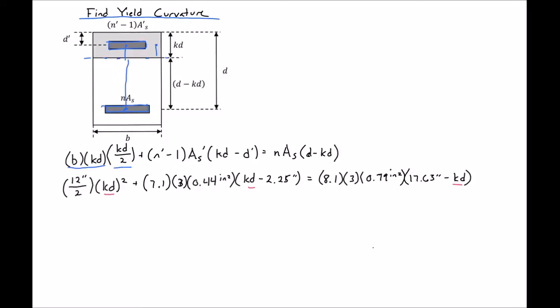Once again, you can use whatever solver you want, or this simplifies to a quadratic fairly nicely. If we simplify it to the quadratic form, we'll get 6 KD squared plus 28.6 KD minus 359.5 equal to 0. We can then solve for KD, which will equal 5.69.